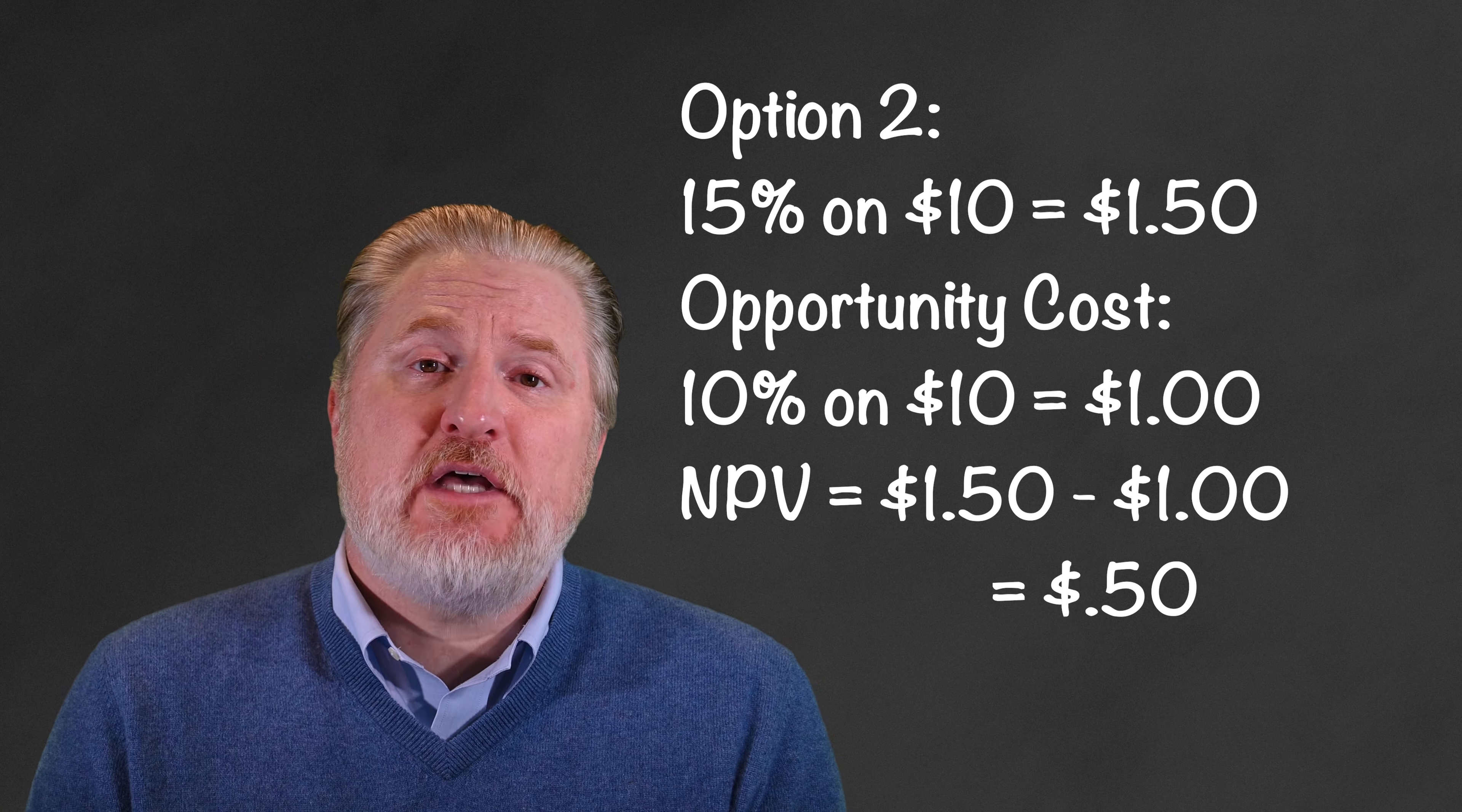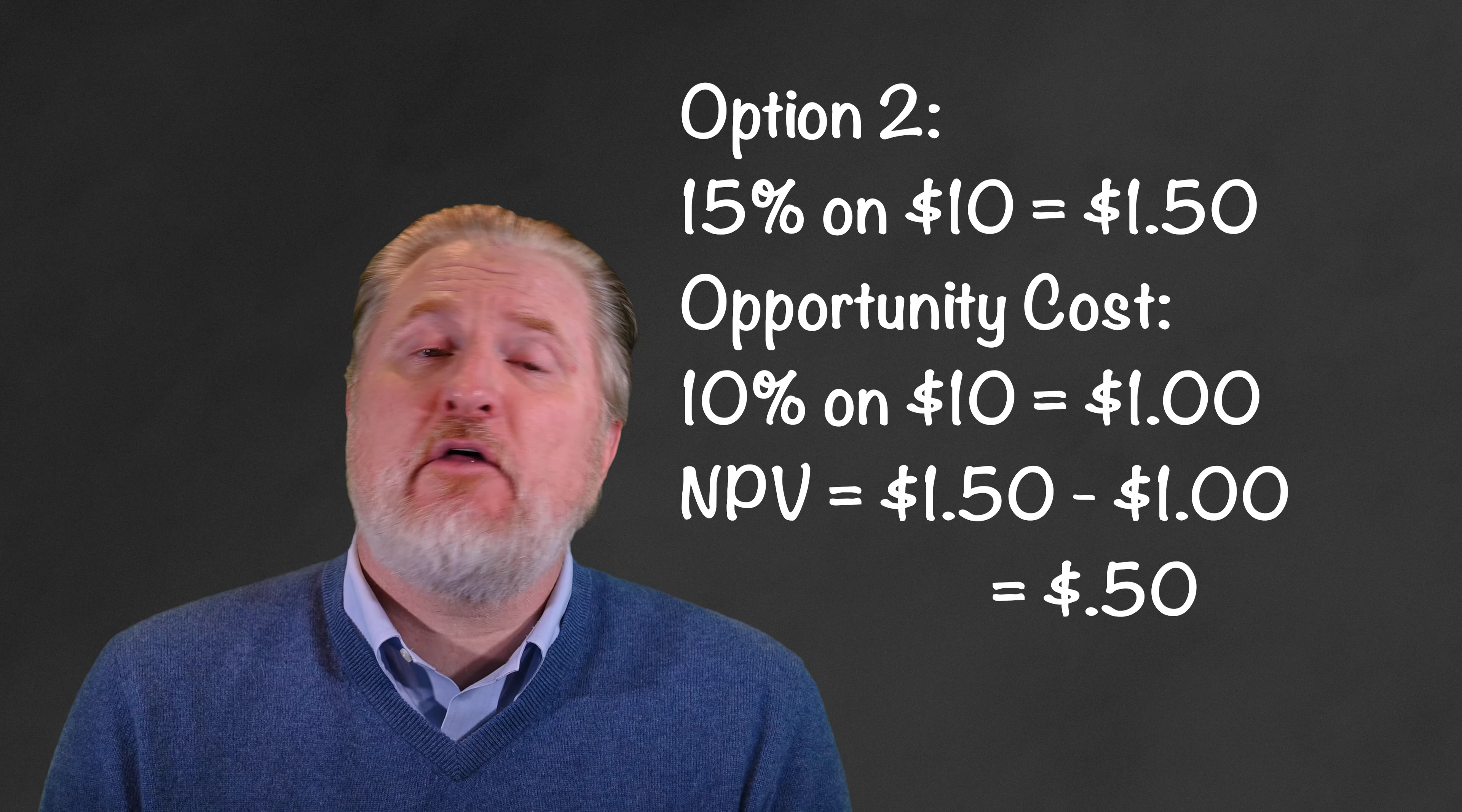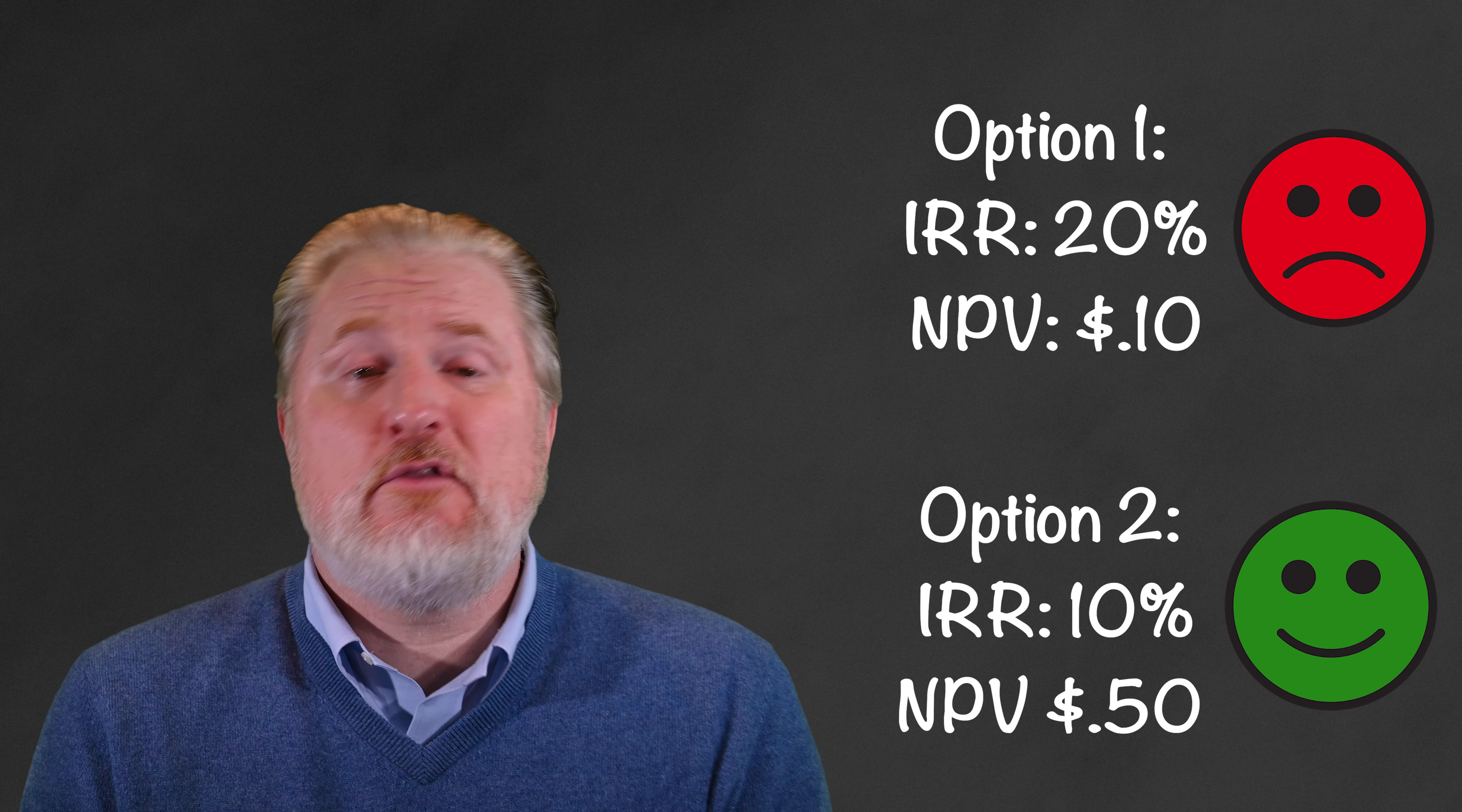Meanwhile, earning 15% on $10 leaves you with a positive NPV of $0.50, or $10 times 15% what you're going to earn on that alternative investment minus $10 times 10% cost of capital. The lower yielding investment is far superior in terms of NPV. Sometimes blindly following IRR can lead you in the wrong direction.